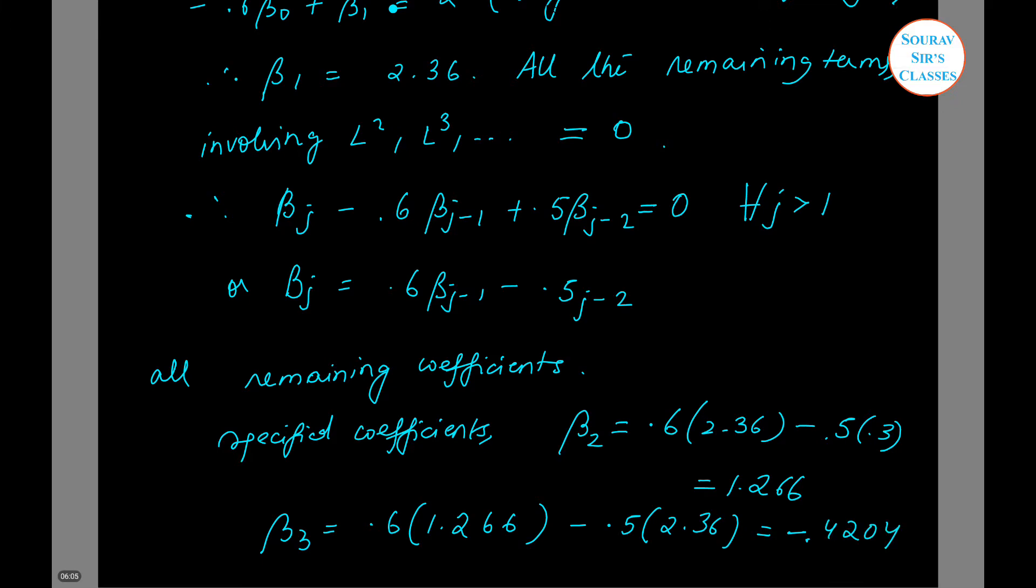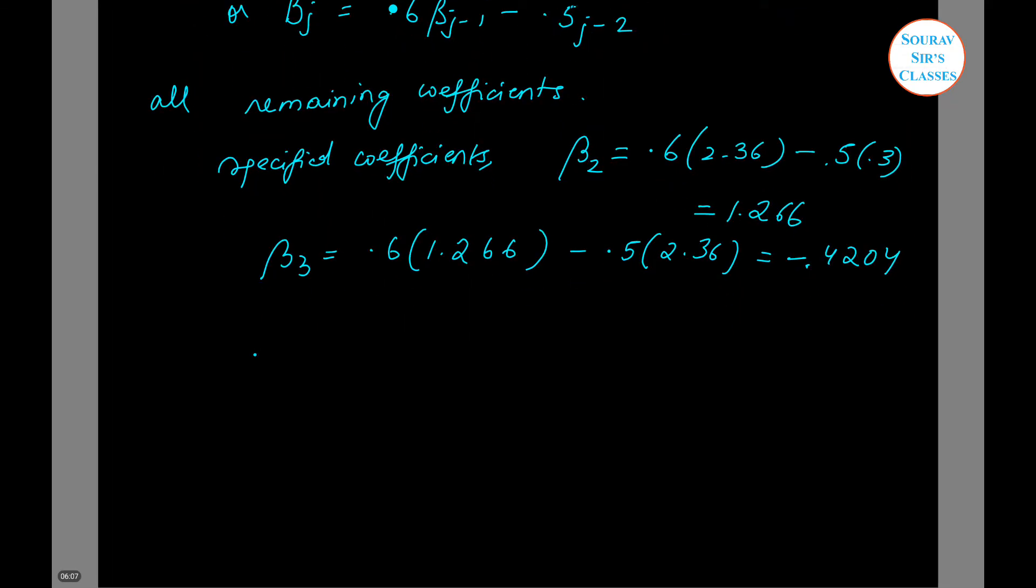Similarly we can calculate beta 4 as 0.6 into 0.4204 minus 0.5 into 1.266 which is equal to minus 0.8524 and so on.